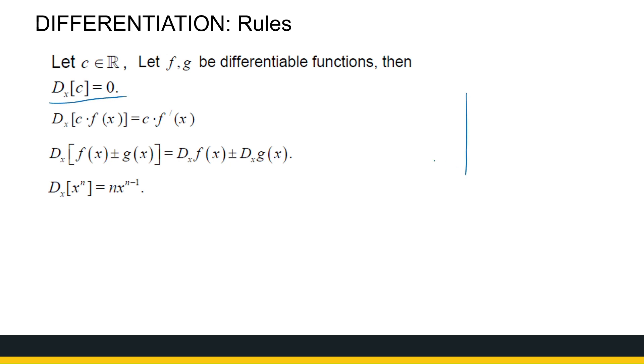Now, if you think of a constant function, of the graph of a constant function, for example, y equals 5, that's a constant function, you can see visually that the gradient of the tangent line everywhere on that curve is zero.